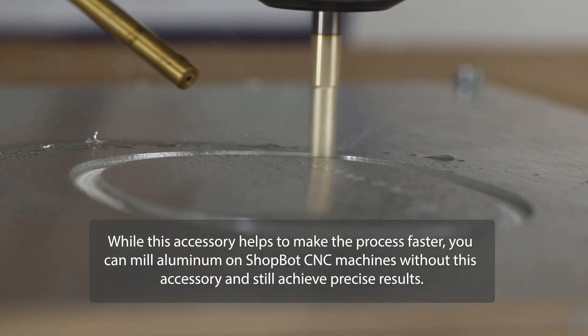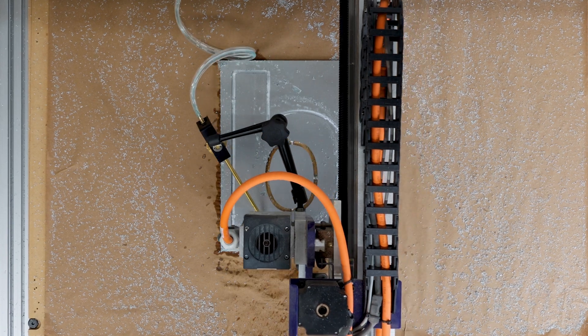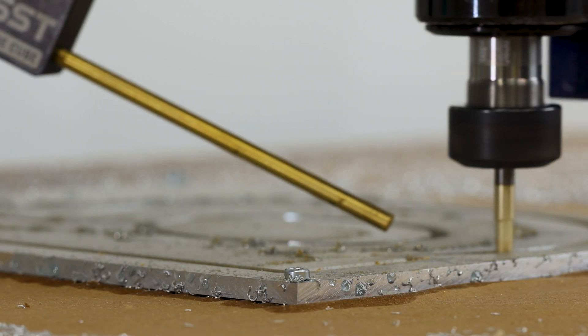When milling aluminum, the chips get really hot and they have a tendency to stick to the tool. The misting system paired with the spiral O-flute prevents this from happening.